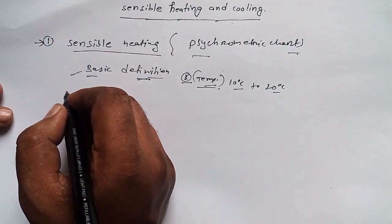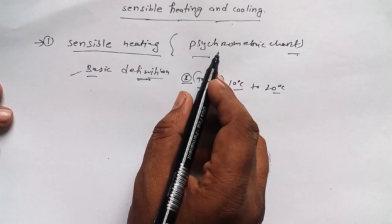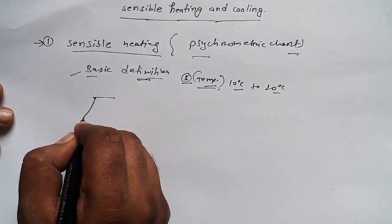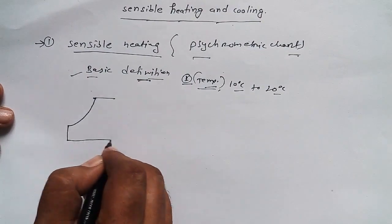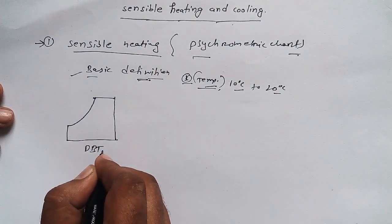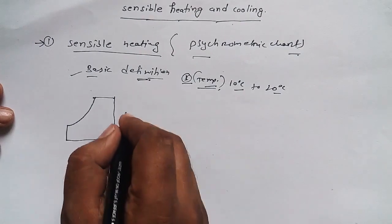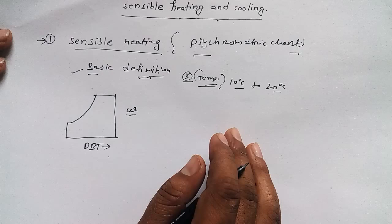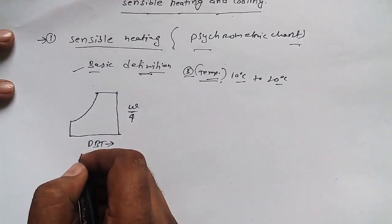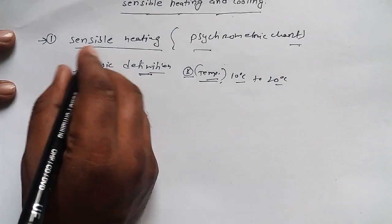If we move towards the psychometric chart, I need to draw a diagram that is most important. This is DBT, dry bulb temperature, and this is specific humidity. So here we have, in case of sensible heating...